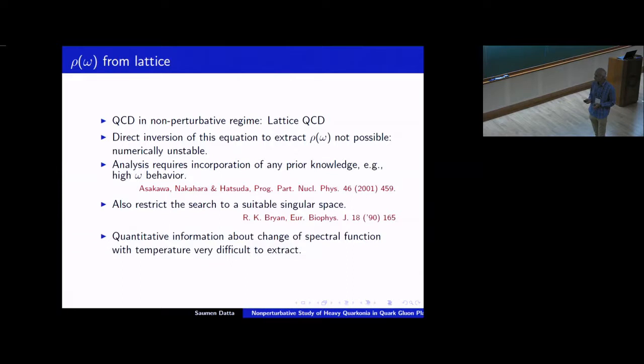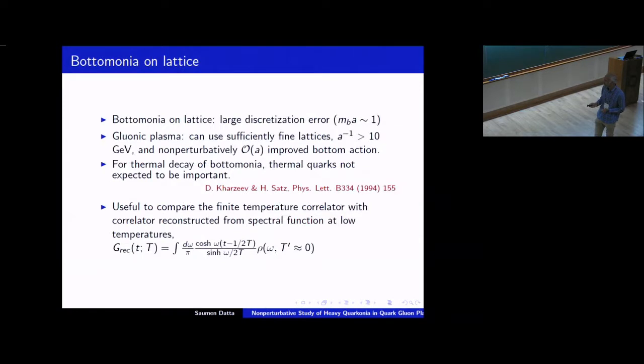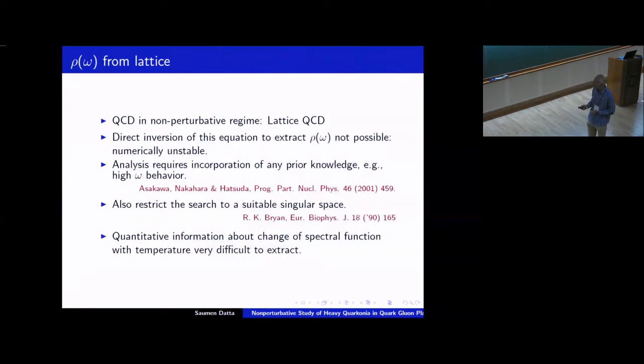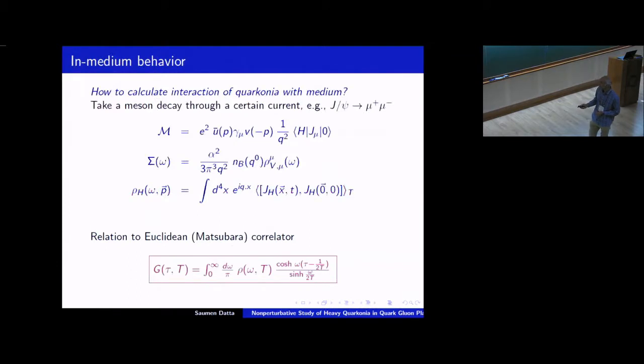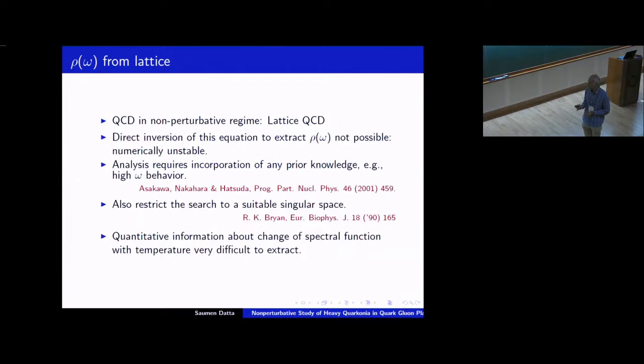Where you try to give information, as much information as you have about the spectral function, and then ask the data to constrain the spectral function in the regions where one does not have information. So one particular implementation of this method is what is called Bryan's version of maximum entropy method. That's just the strategy I'll be using for my next plot. So what one will be doing is some kind of look for solutions in a suitable singular space of the kernel that I showed in the equation before. And as I said, provide information through some kind of entropy form to restrict the solution.